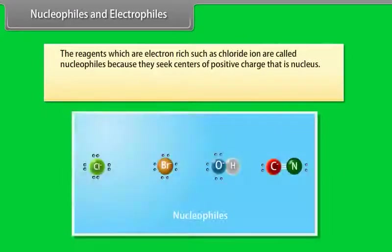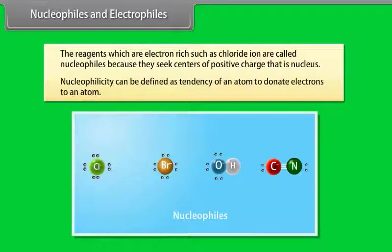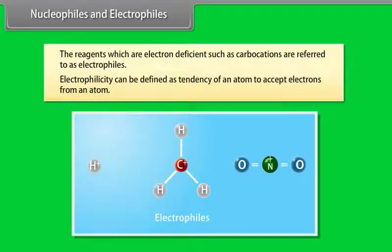Nucleophiles are reagents which are electron-rich, such as the chloride ion — they are called nucleophiles because they seek centers of positive charge (the nucleus). Nucleophilicity is defined as the tendency of an atom to donate electrons to another atom. Electrophiles are reagents which are electron-deficient, such as carbocations. Electrophilicity is defined as the tendency of an atom to accept electrons from another atom.